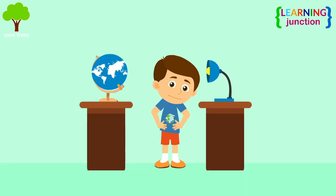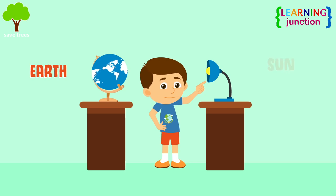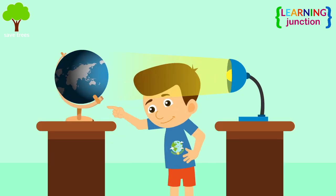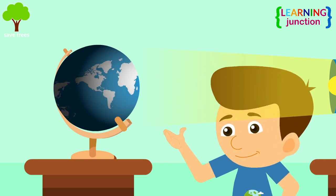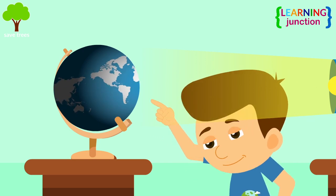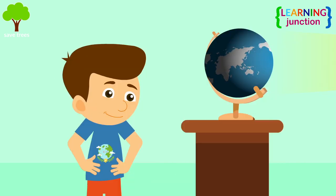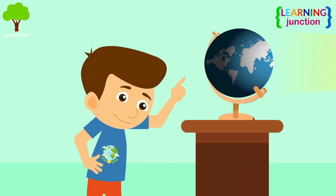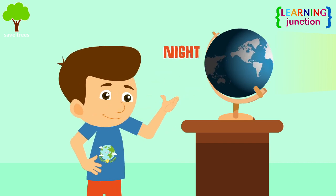Let's assume this globe as Earth and consider this lamp as the Sun. Now look closely — the light is falling only on one side. This is day. Now look at the other part and you can see it's dark. This is night.